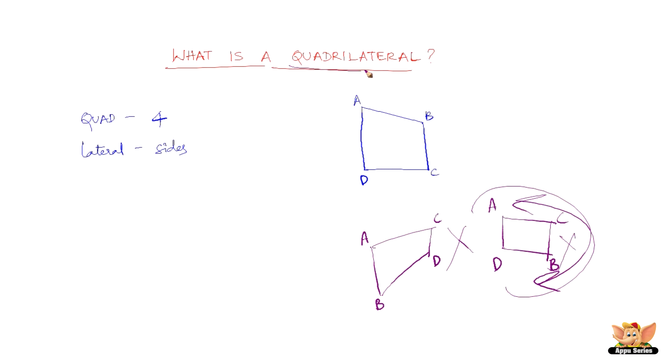Once again, quadrilateral means quad is four and lateral is sides. So a four-sided closed figure in geometry is called a quadrilateral. The sides here are AB, BC, CD, and DA.